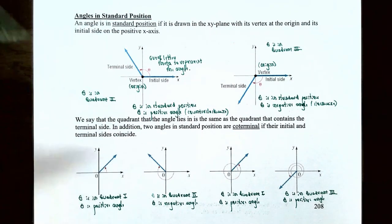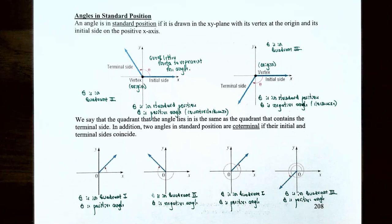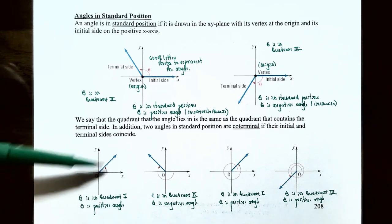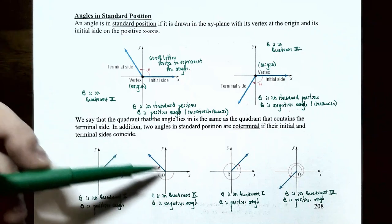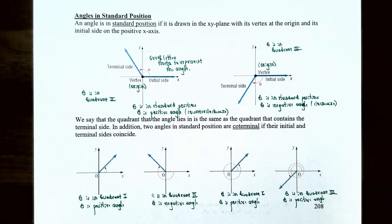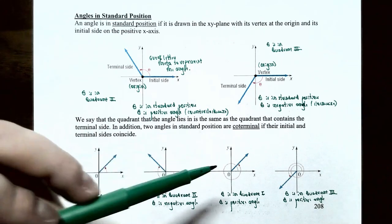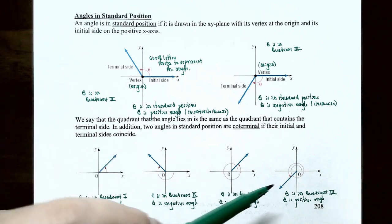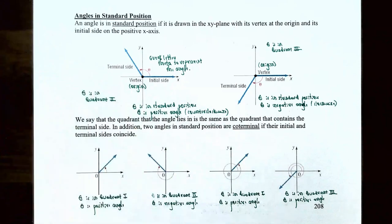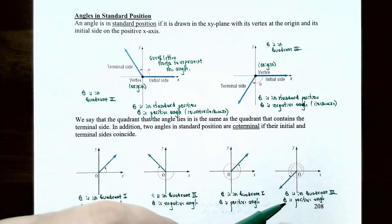Two angles in standard position are coterminal if their initial and terminal sides coincide. In the figures shown: one angle has a positive theta in quadrant one from a counterclockwise rotation; another has a negative theta in quadrant two from a clockwise rotation; a third shows theta positive in quadrant one after more than one revolution counterclockwise; and a fourth shows theta positive in quadrant three from a counterclockwise rotation.